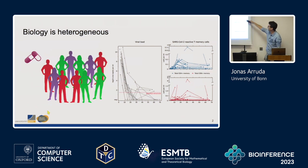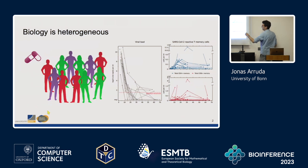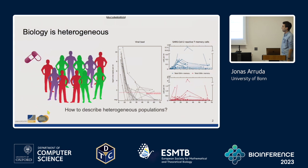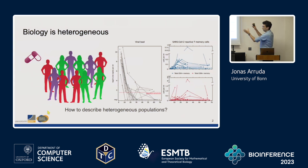If you look at the level of the different cells we have, they are also different for the different individuals. So a really key question in biology is: how do we model heterogeneous populations? It can be individuals or also on a cell level, combining all these different things together.